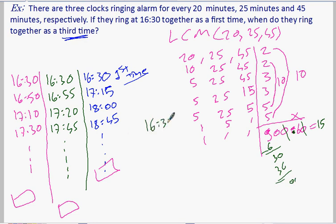So this is 16:30. So after 15 hours, what will it be? So how can we do? After 10 hours, it should be 26, which is 24 plus 2, 2. After 10 hours, it will be 2 o'clock, and plus 5 more. 2 plus 5, 7:30. 15 hours later. This is the second time.